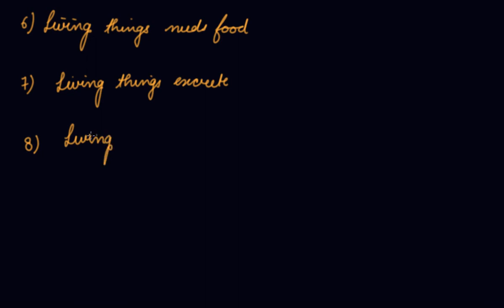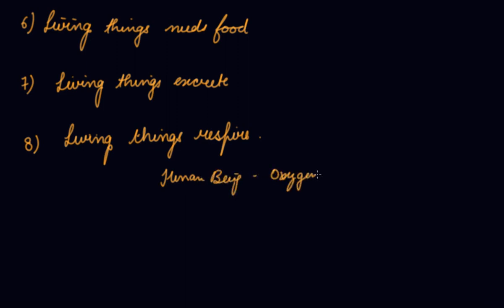Eighth characteristic: living things respire. As human beings, you need oxygen — you breathe in oxygen. Plants take in carbon dioxide. Carbon dioxide is produced as a waste in our body; when you breathe out, this carbon dioxide is expelled from your body along with the unused air. This process is known as respiration. Breathing in and out is a part of respiration, so we all respire.